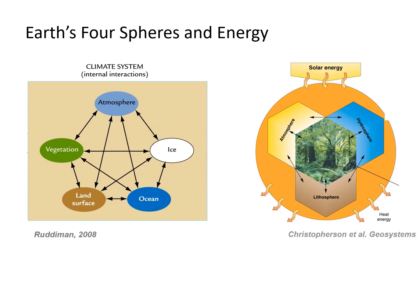The Sun is the main source of energy to the Earth. Because all of the spheres meet at the surface of the Earth, the surface energy balance is a key determinant of climate from local to global scales.